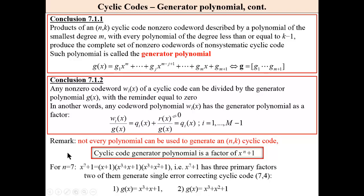A very important remark. Not every polynomial can be used to generate a given (n,k) cyclic code. Cyclic code generator polynomial is a factor of this polynomial. This is without any proof. It is no time to discuss why it is so.